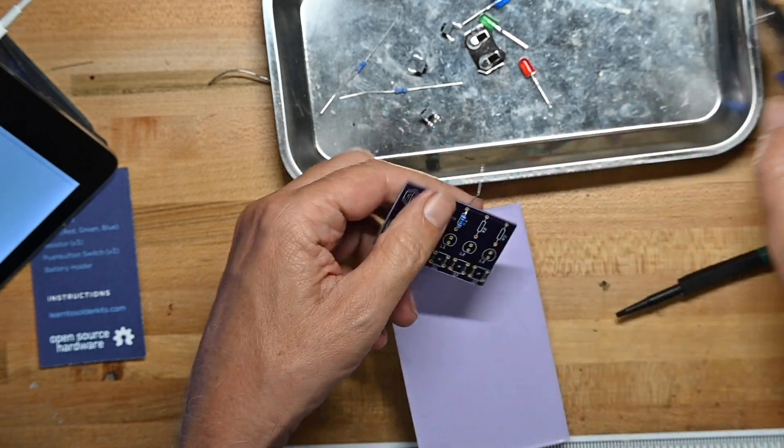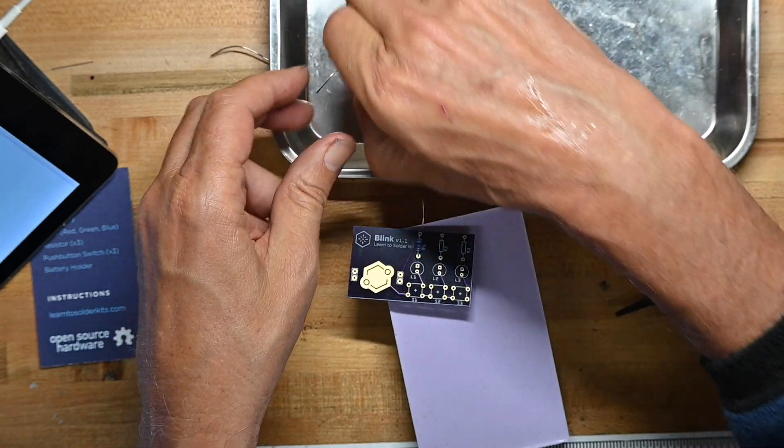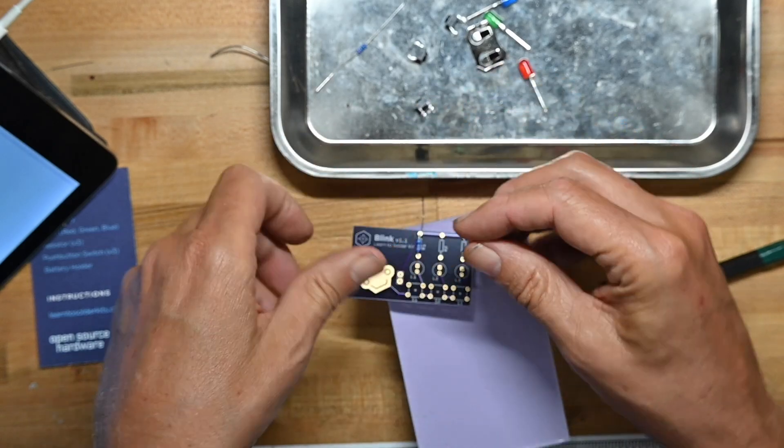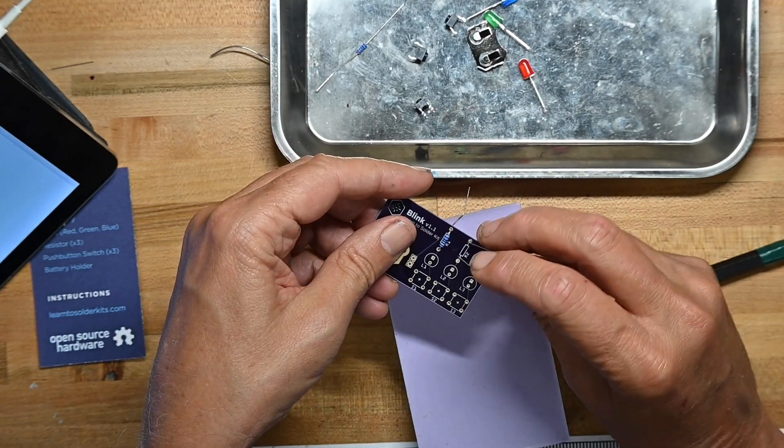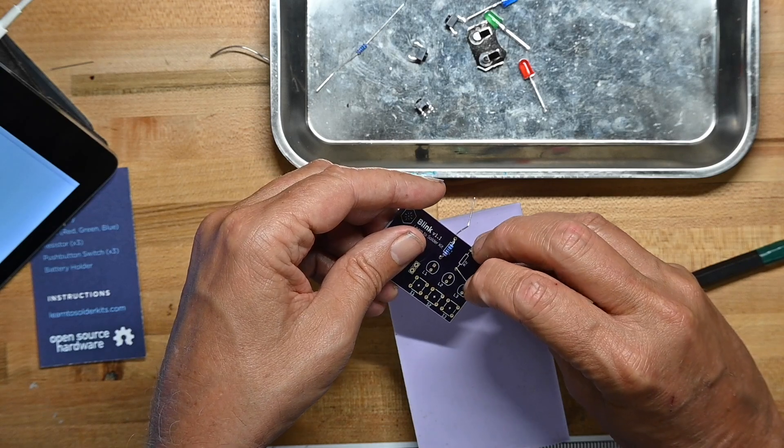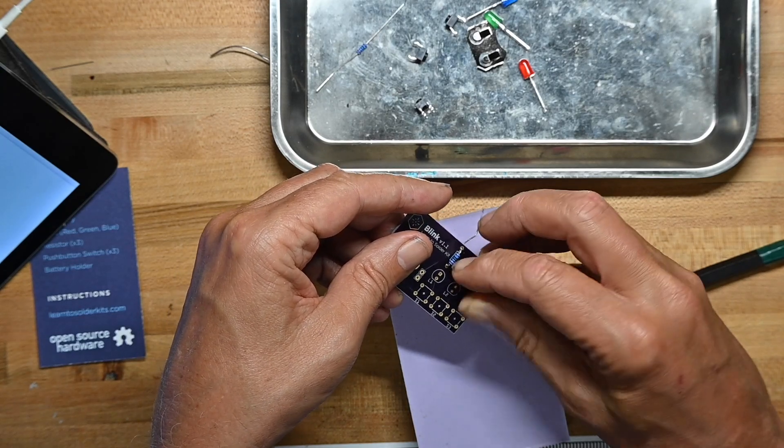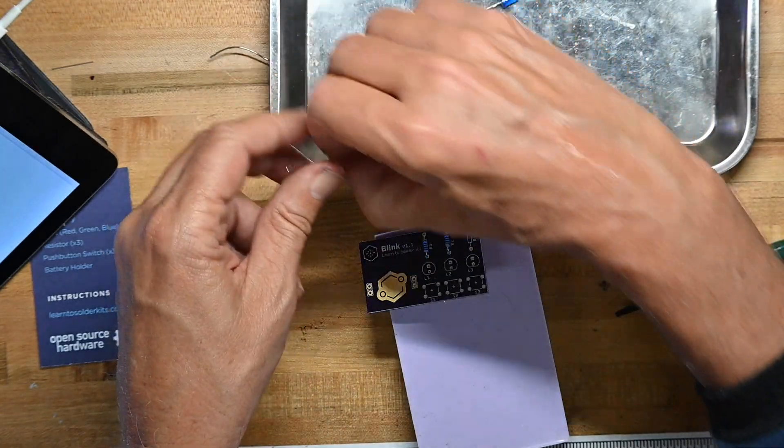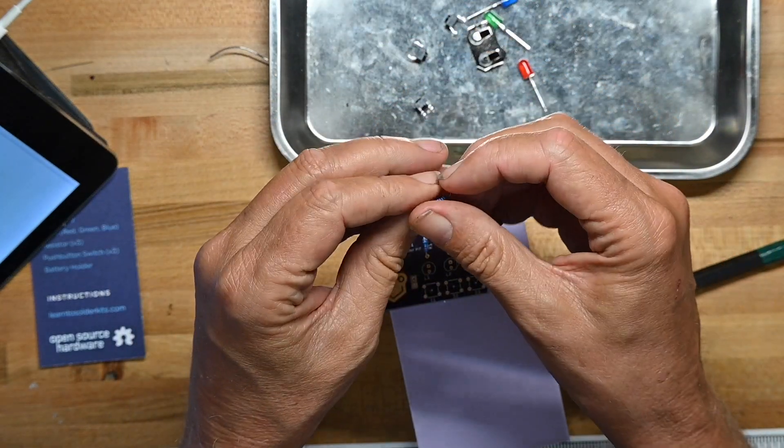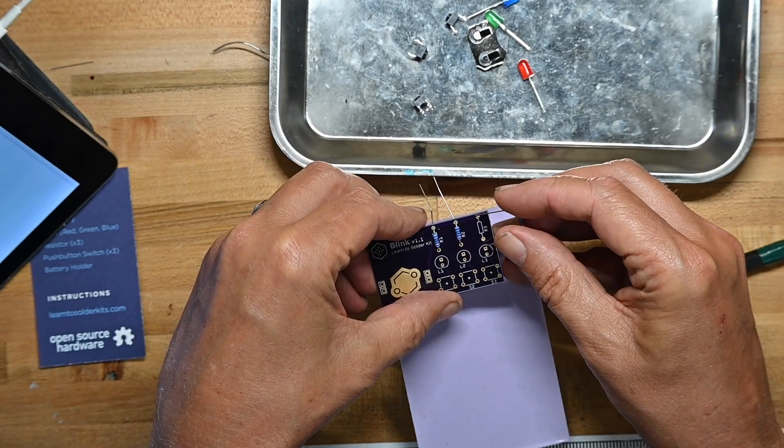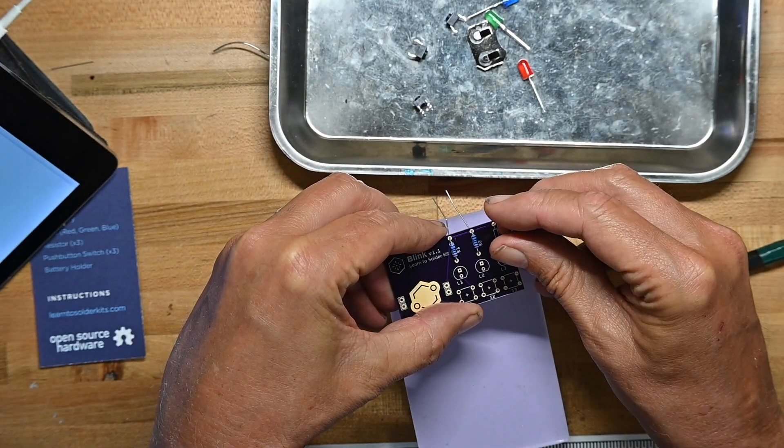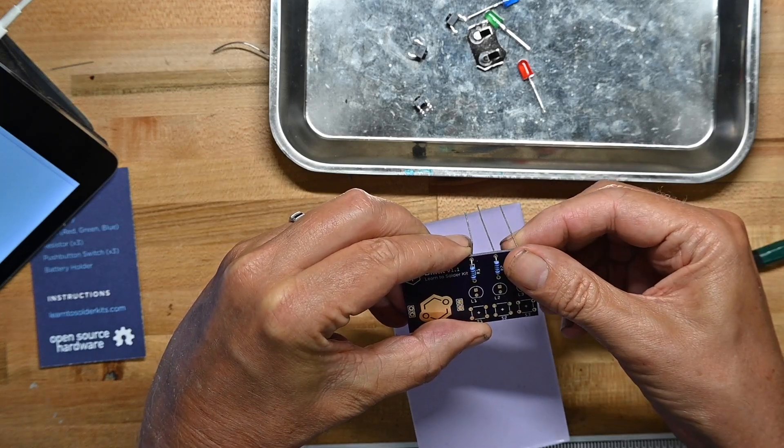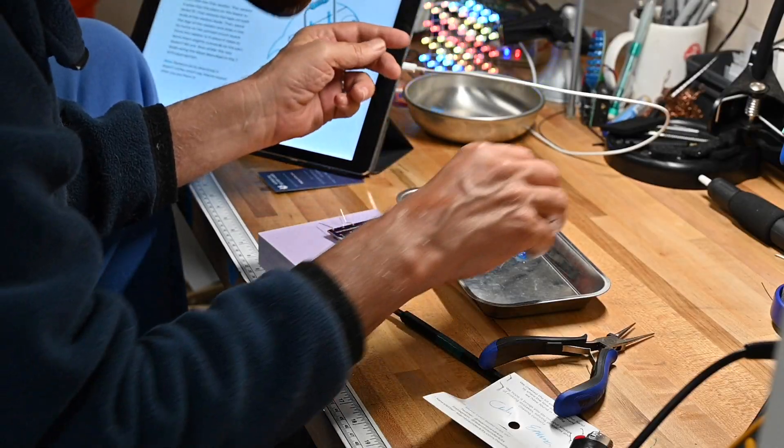This circuit board is also thicker than usual. One thing I will say - you can see the traces, it would have been maybe nicer to have them a little more contrasty so you could see exactly without squinting. Maybe go with a slightly lighter color. They're kind of a purple right now.